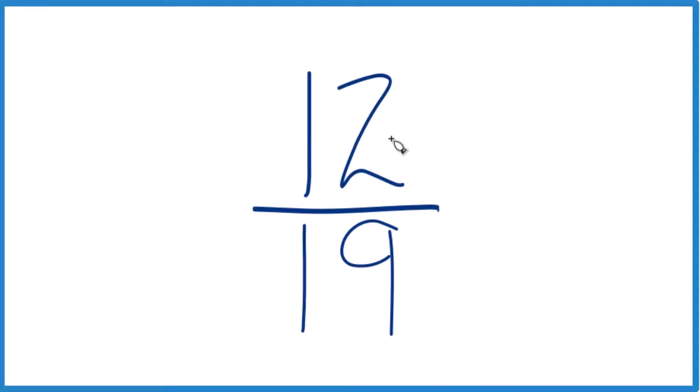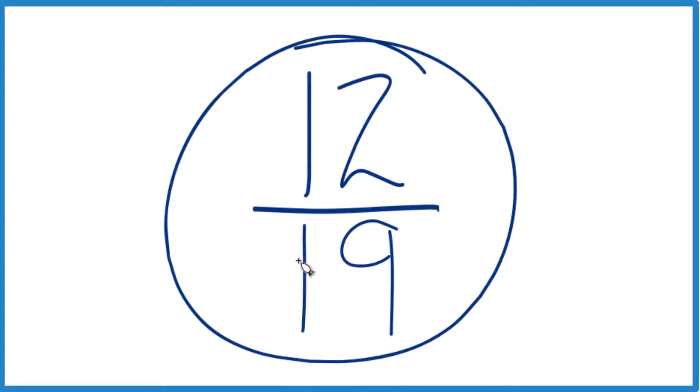All right, let's simplify this fraction here. We have 12/19, and we'd like to reduce this down to the lowest terms.